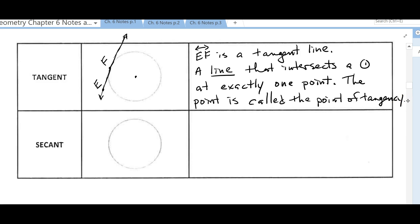Sometimes we'll just call it the tangent point. Either one is fine. Point of tangency or tangent point, both are acceptable. In this case, F is our point of tangency.